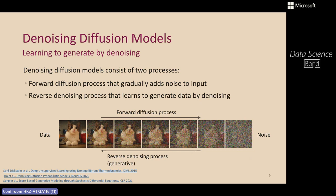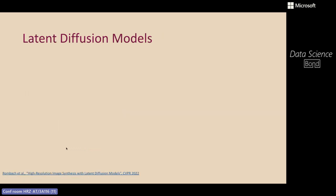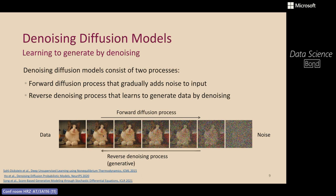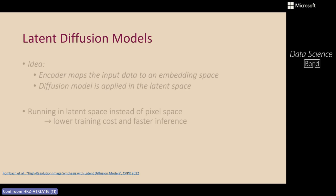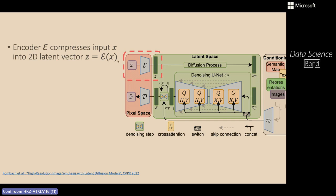Stable Diffusion is a latent diffusion model. In a standard diffusion model, the latent space has the same shape as the original image, which is expensive in space since images are quite large. Latent diffusion models keep the diffusion process but operate on a compressed latent space instead of the original image space. An autoencoder maps the image X to a latent Z, and a decoder maps the latent Z back to the image, so the diffusion process operates on the latent to save time and space.